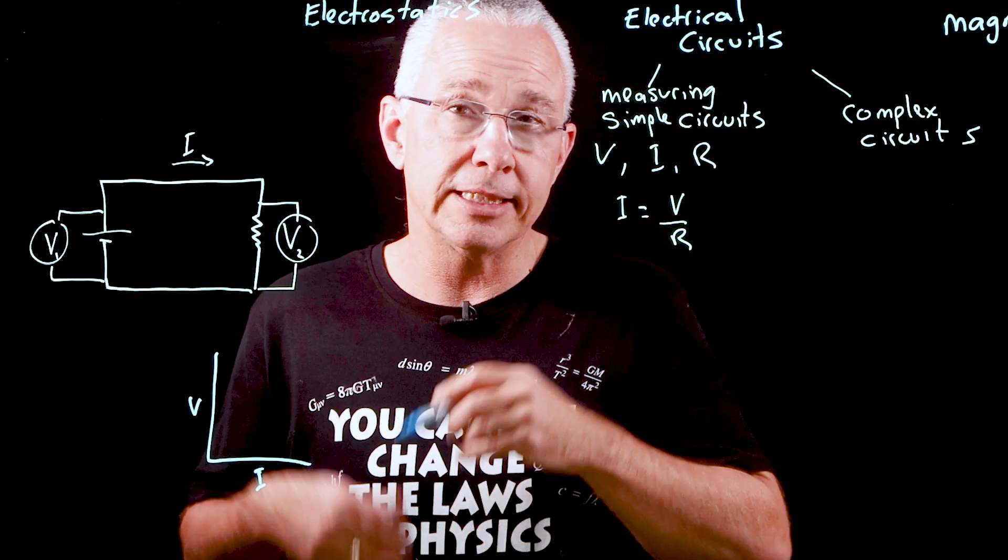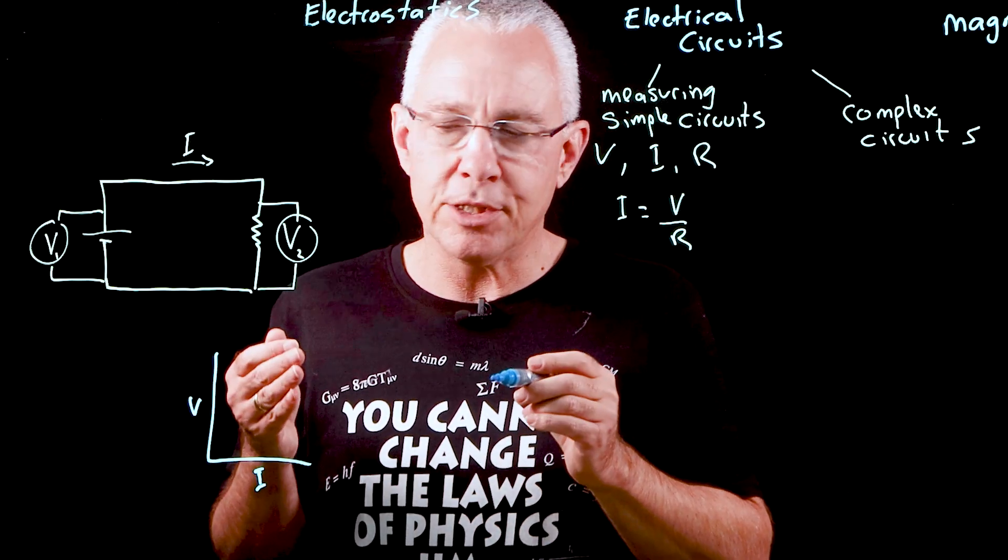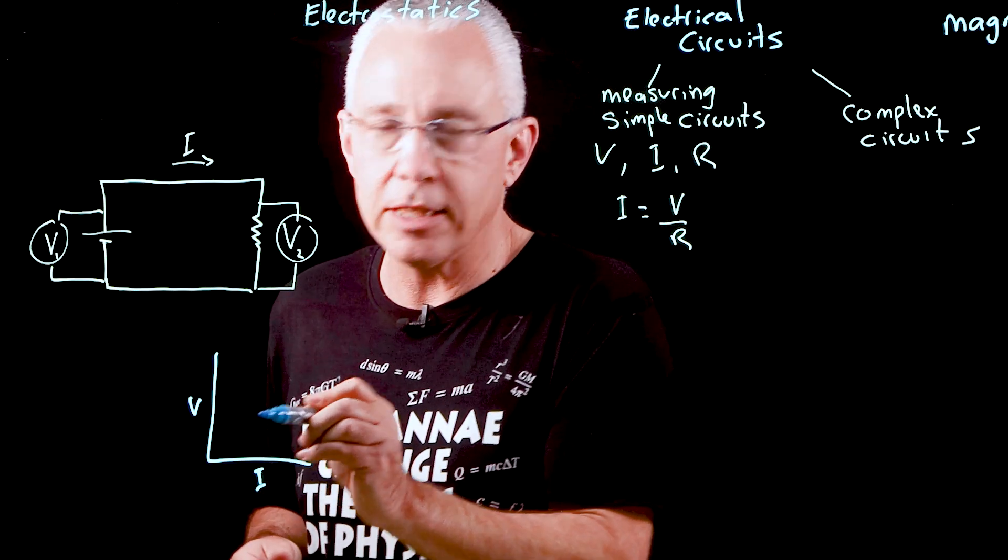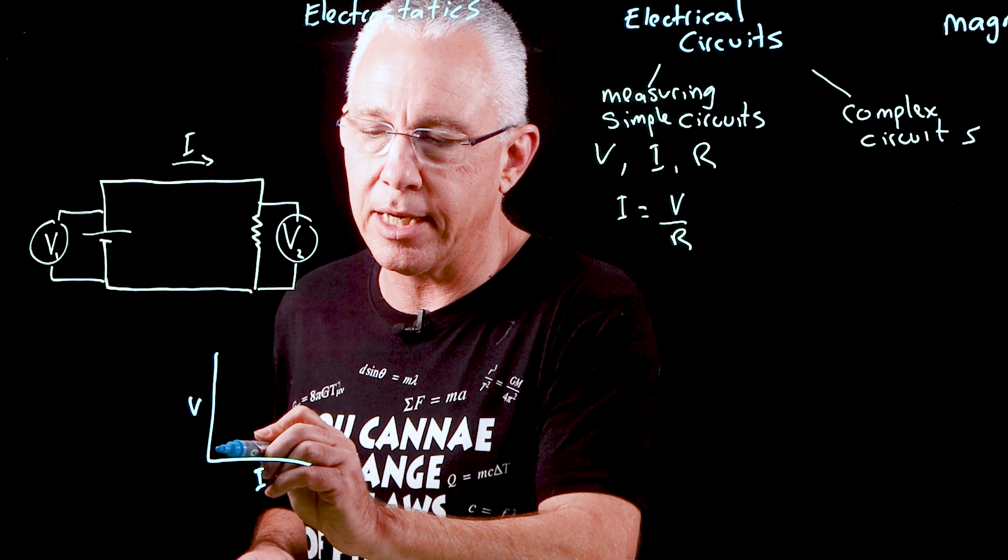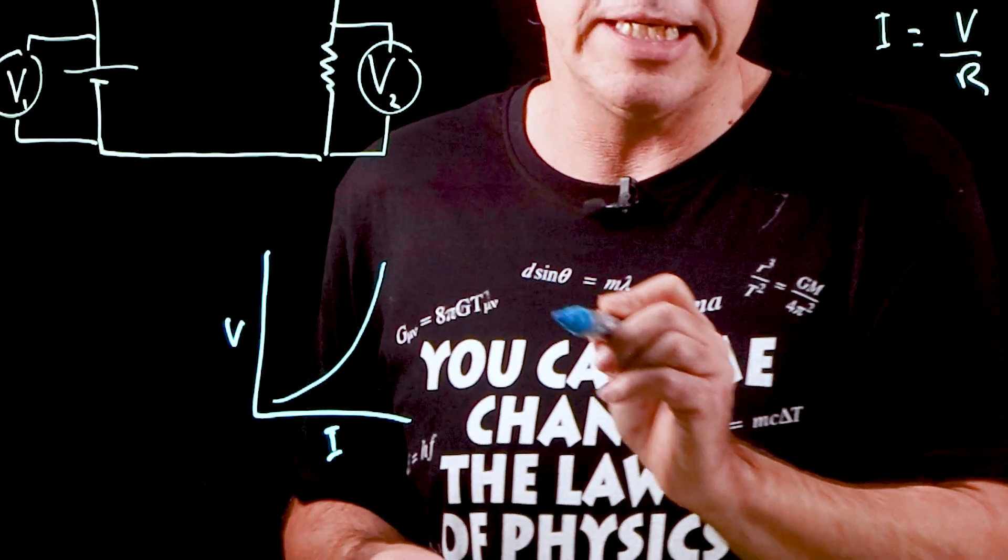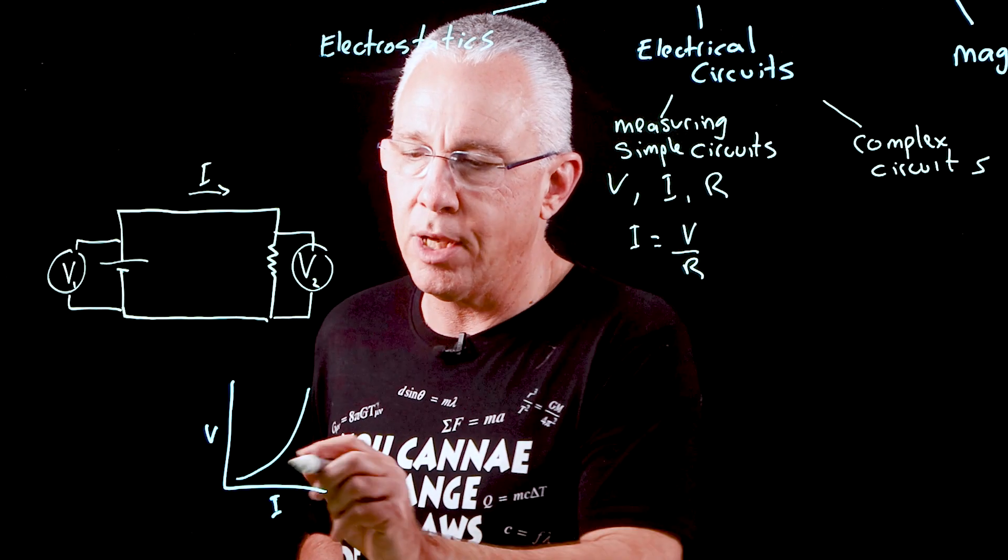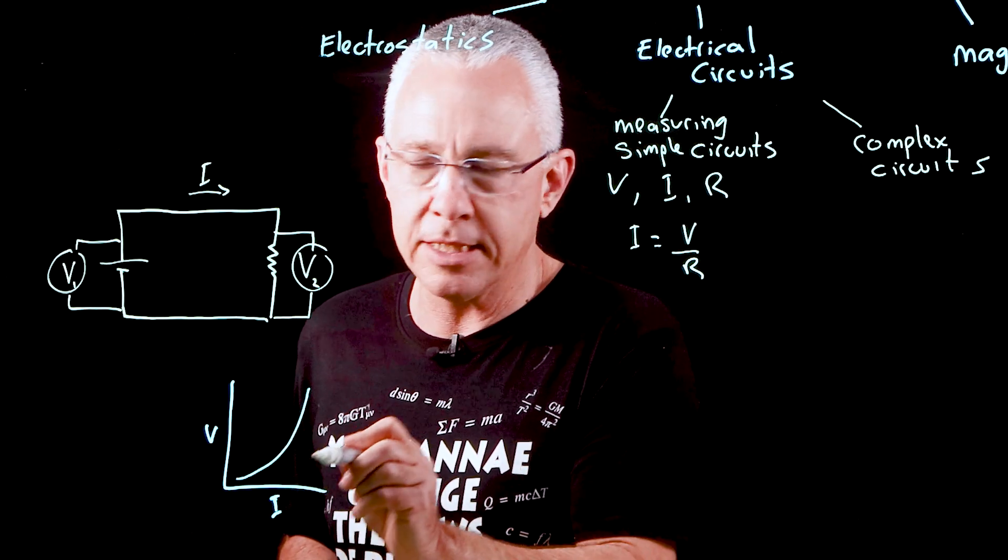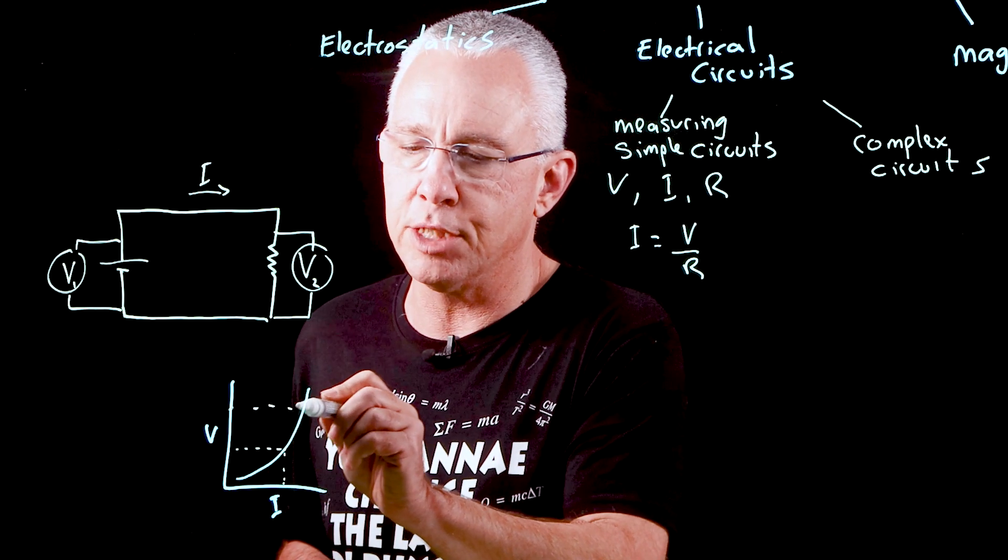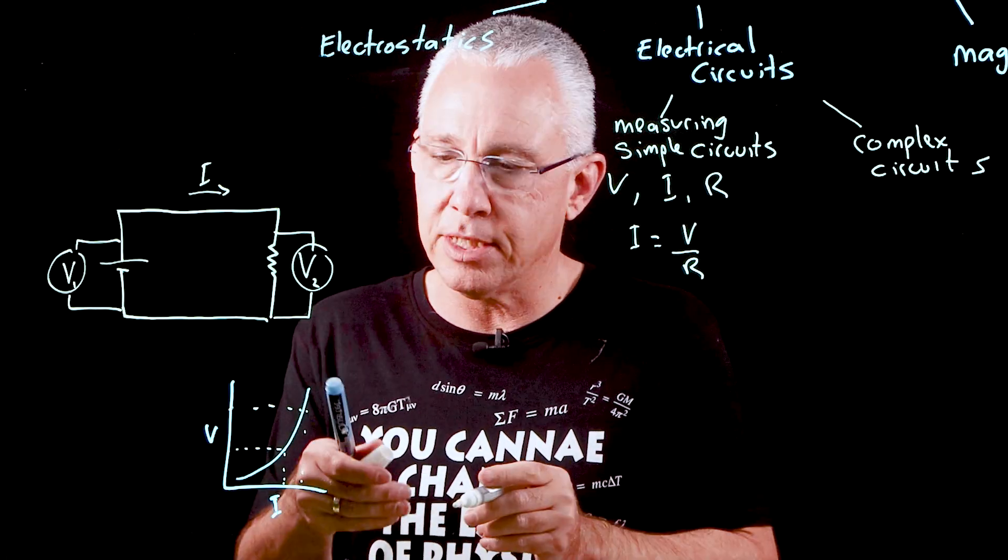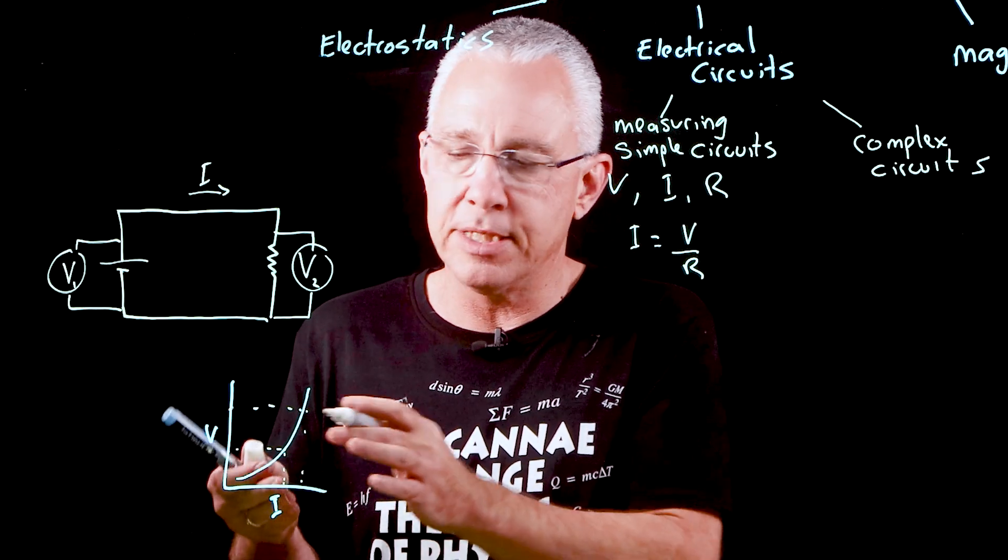As voltage increases, current might increase, but not at a constant rate. Whatever the resistance is, it's determined by the voltage at that point and the current at that point. You can see the resistance is actually the slope of the line, and in this case my resistance is increasing as my current is increasing. This was developed by George Ohm in the early 1800s.